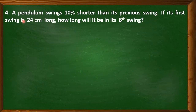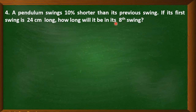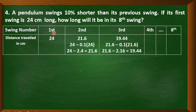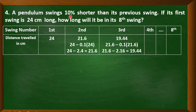Now let's have the fourth problem. A pendulum swings 10% shorter than its previous swing. If its first swing is 24 cm long, how long will it be on its 8th swing? Let us illustrate first. On the first swing, the distance traveled is 24 cm. On the second swing, we have 21.6. The condition says the swing is 10% shorter than its previous swing.